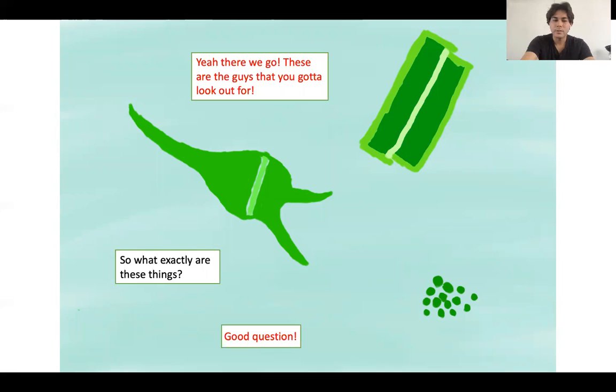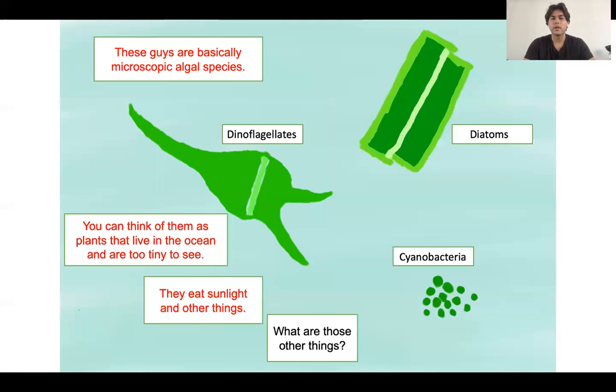And I have a little narrative. So what exactly are these things? Of course, good question. You can't tell just by looking at it if you've never seen these before. So here we have dinoflagellates, diatoms, and cyanobacteria. These guys are microscopic algal species. Of course, I need to pull that down a little bit. Basically, you can think of them as plants that live in the ocean that are too tiny to see. They eat sunlight and other things.